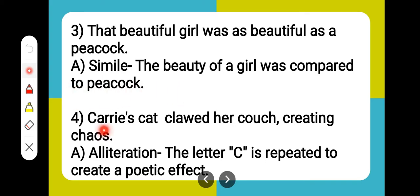Number 4: Carrie's cat clawed her couch creating chaos. It is alliteration because here the letter C is repeated to create a poetic effect.